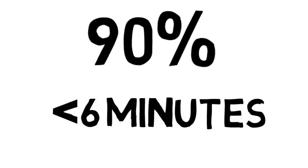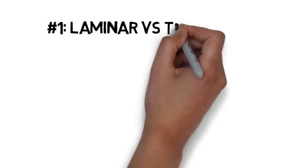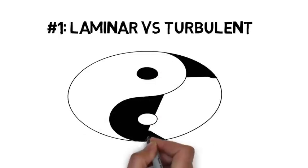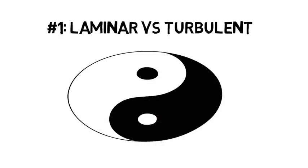Get ready to learn 90% of the aerodynamics you're going to need in under six minutes. The first big idea is classifying your flow as either laminar or turbulent. These two classifications can basically be thought of as the yin and yang of airflow.